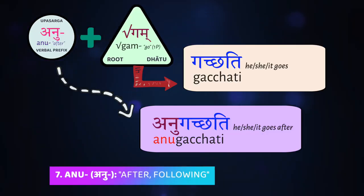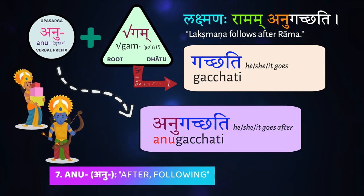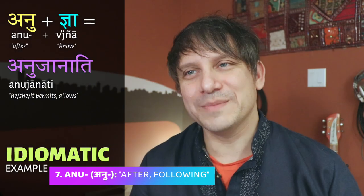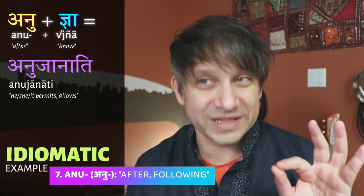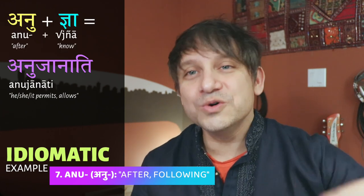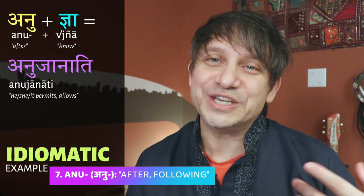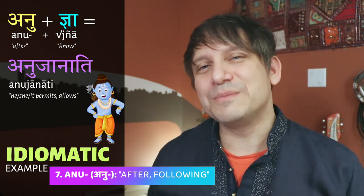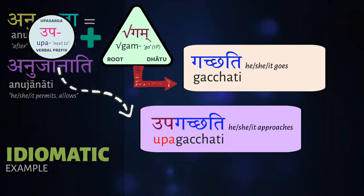The prefix anu means 'after or following something.' Anu plus gam means 'to go after something, to follow someone, to chase.' Lakṣmaṇaḥ Rāmam anugacchati — 'Lakṣmaṇa follows after Rāma.' An idiomatic usage comes with the verb jñā, 'to know': anu plus jñā means 'to give permission.' Rāmaḥ anujānāti means 'Rāma gives his permission.'